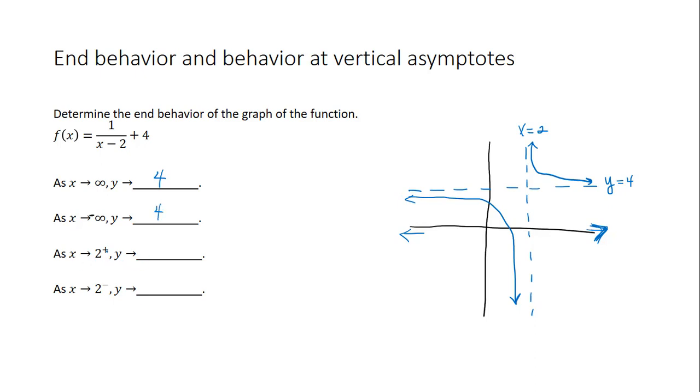And then as x approaches 2 from the right, what is y approaching? So 2 from the right means that we're coming in to this vertical asymptote from the right side. Notice that the graph is going up infinitely and the y values are getting larger or going to infinity.